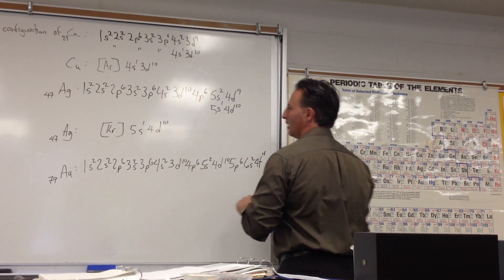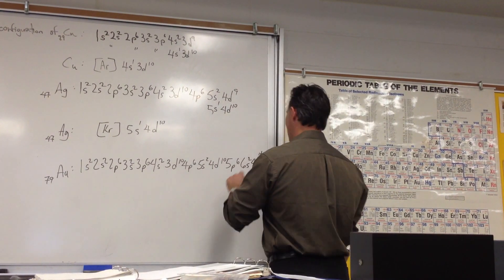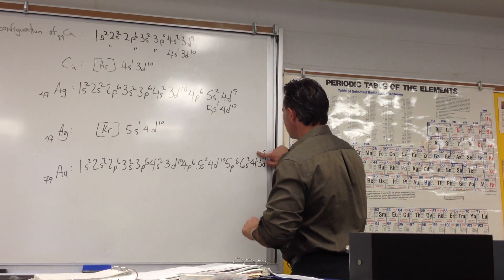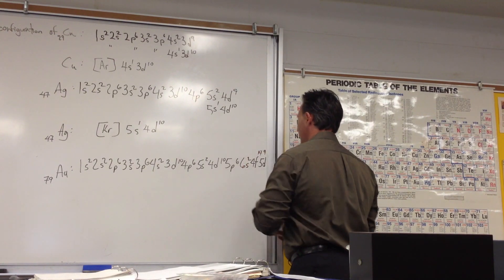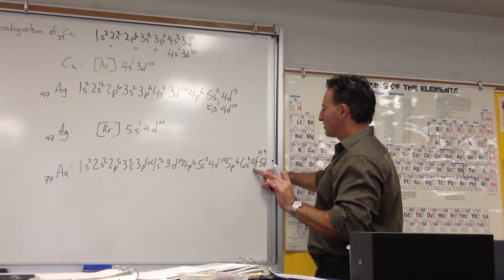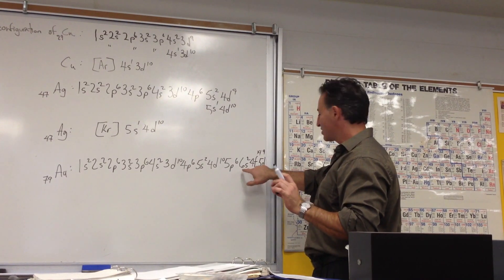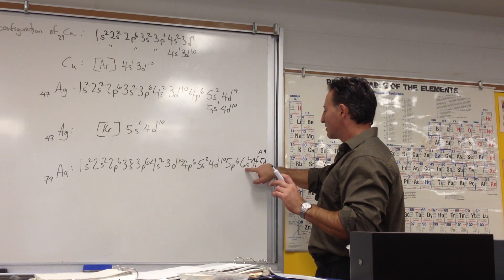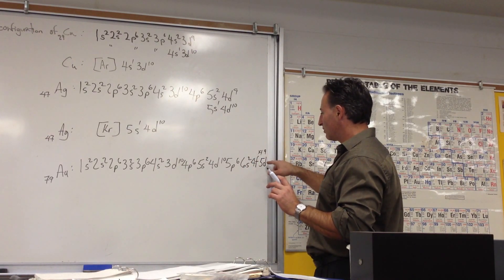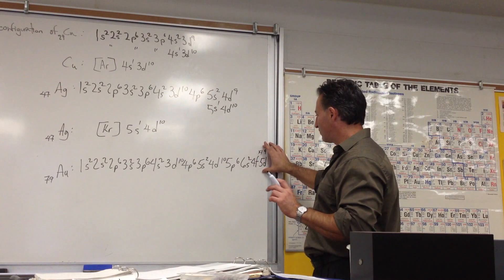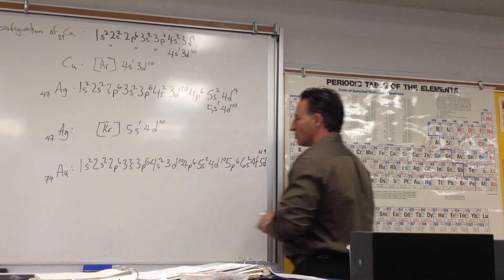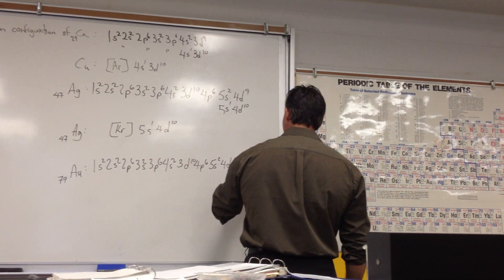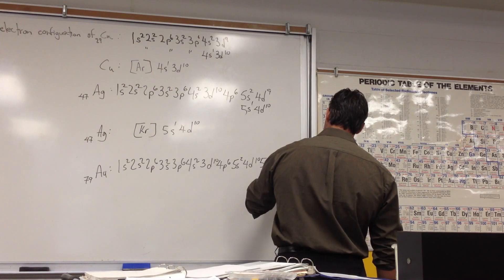And then you would expect 5d9. But again, what we notice is that the 4f is left untouched. But what we do have is the 6s level, which is very close in energy to the d levels. So that s is going to lose an electron, promote it to the d level. So we'll have a filled sub-level and a half-filled. So gold will have all the same pattern again, except now it will be 6s1, 4f14, 5d10.